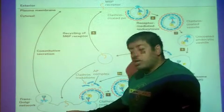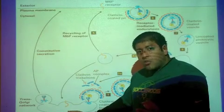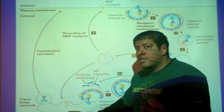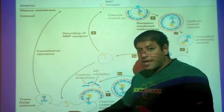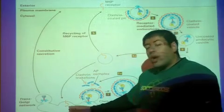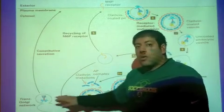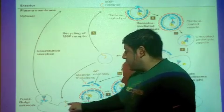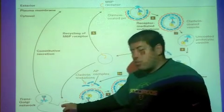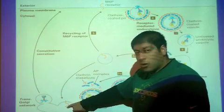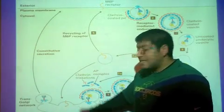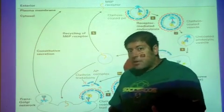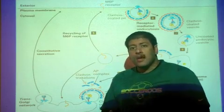So once we get to the trans-Golgi network, our lysosomal enzyme has the M6P ticket or M6P modification. Awaiting it in the trans-Golgi network, the M6P receptors, right here on the trans-Golgi network membrane, represented here by this little hook. So this little hook is the M6P receptor.